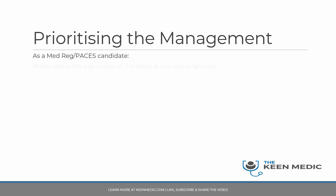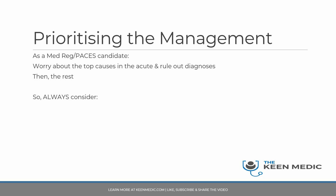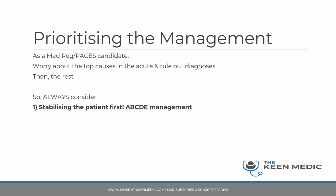As a candidate and as a med reg, you have to worry about the top causes in the acute and the rule-out diagnoses we went through earlier — make sure you know them very well and prioritize them correctly, and then think about the rest. Always consider stabilizing the patient first — follow the A to E approach: airway, breathing, circulation, disability, and exposure management. Say that this is what you would do and that if need be, you would resuscitate them adequately with fluids, blood, etc. That's the language you should be using — it's the very first thing you need to be doing.